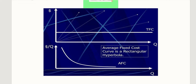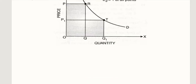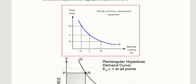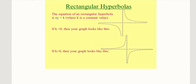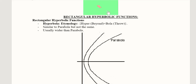It is important to note that the average fixed cost curve does not cut the x-axis, because the fraction reduces further and further but never becomes negative. This is why the asymptote comes into being, making it a rectangular hyperbolic function. This concludes the introduction to the rectangular hyperbolic functions and their economic applications.